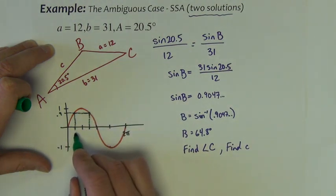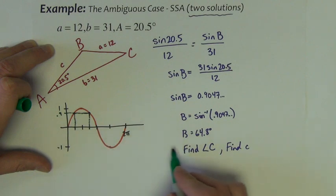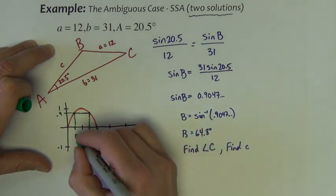And notice that this time this line hits the x-axis at two places. One of the places that it hits the x-axis right here is what the calculator gave me, 64.8 degrees.